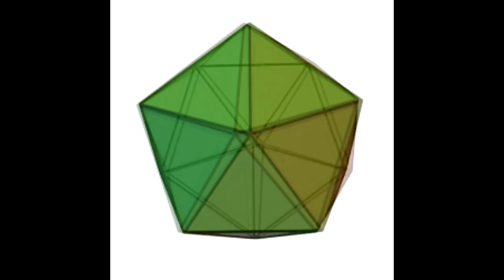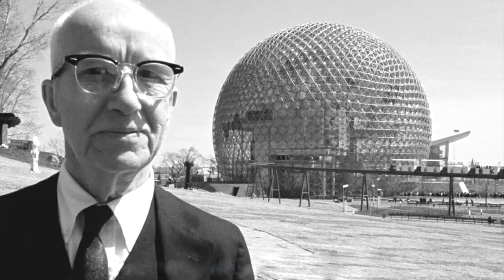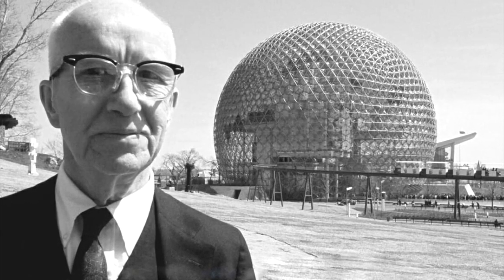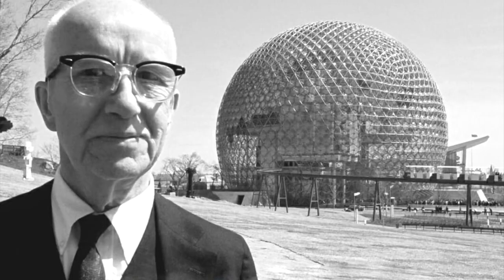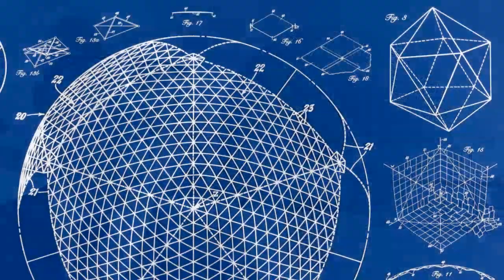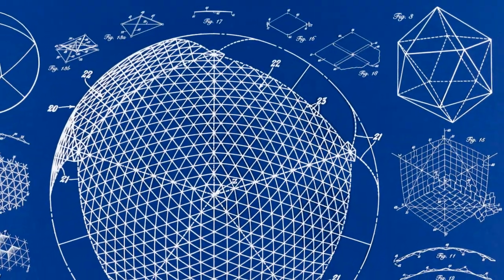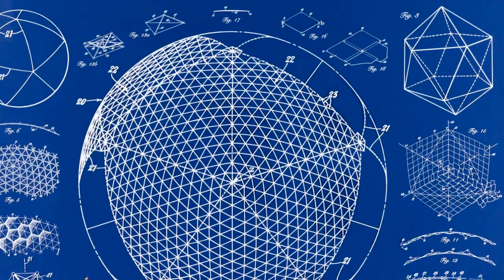Buckminster Fuller won the gold medal for designing the geodesic dome, the strongest structure known to man, from the American Institute of Architects. When he designed the dome, he extrapolated the math from the icosahedron.